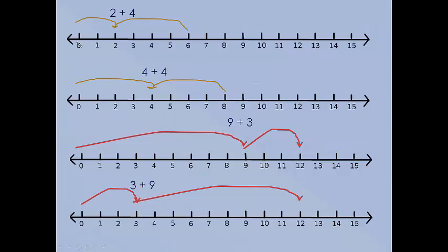Here are your answers. 2 plus 4 equals 6. 4 plus 4 equals 8. 9 plus 3 equals 12. 3 plus 9 also equals 12. Order doesn't matter.